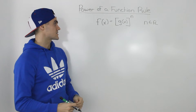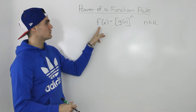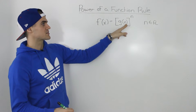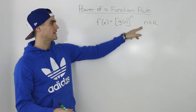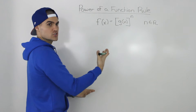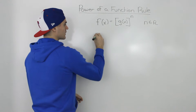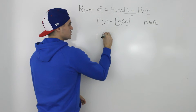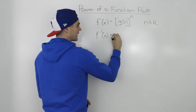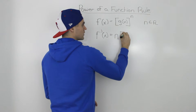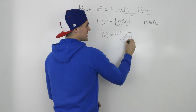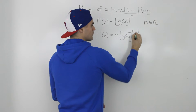The way it works is like this. Let's say that you have a function f(x), and it's basically a function g(x) to the power of n, where n is just any real number. The derivative of a function in this format — all you do is apply the power rule on this function, so you bring the n down, and the function inside stays the same as it is, then you subtract 1 from the exponent.